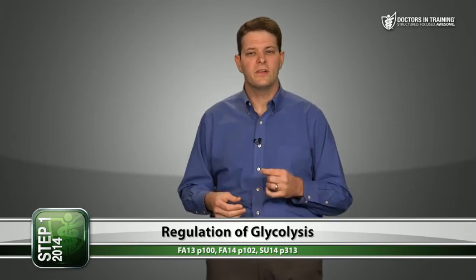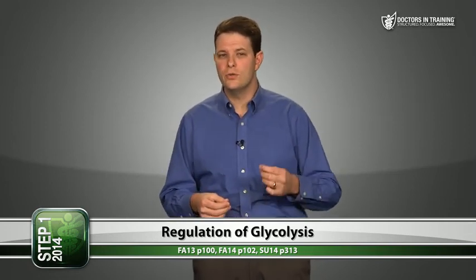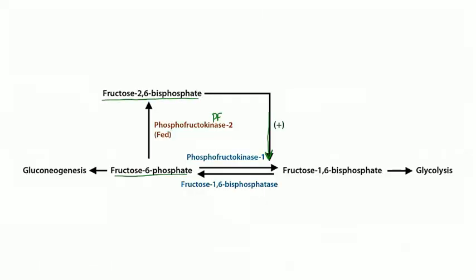Let's dive deeper into glycolysis regulation by fructose-1,6-bisphosphate and fructose-2,6-bisphosphate. Fructose-2,6-bisphosphate is made from fructose-6-phosphate by phosphofructokinase-2 (PFK2) - not PFK1. Fructose-6-phosphate can either be converted to fructose-1,6-bisphosphate by PFK1 in the normal glycolytic pathway, or to fructose-2,6-bisphosphate by PFK2. When you eat and are in a well-fed state, insulin release stimulates PFK2 to make more fructose-2,6-bisphosphate, which in turn stimulates glycolysis by stimulating PFK1. Insulin stimulates glycolysis indirectly by stimulating PFK2.